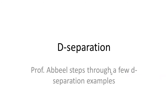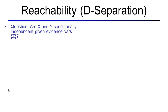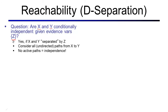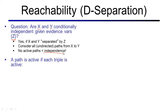Hi, welcome to the lecture on D-separation. The types of questions we're going to answer are of the following form: are two random variables x and y conditionally independent given some evidence variable z? The answer will be yes if x and y are separated by z. To find out whether this is the case, we will consider all undirected paths from x to y, and if none of these paths are active, we declare independence. A path is active if each triple along the path is active.